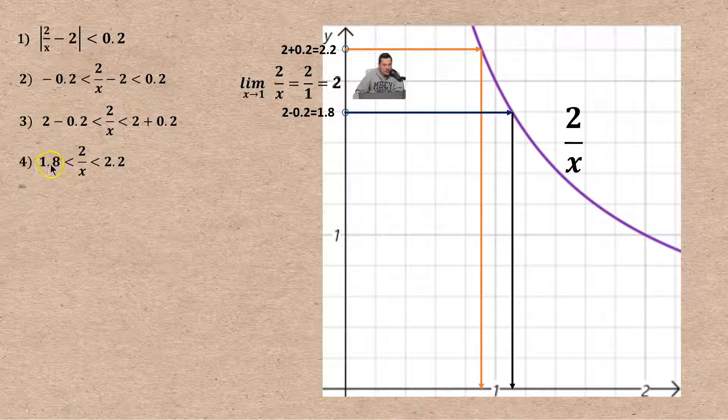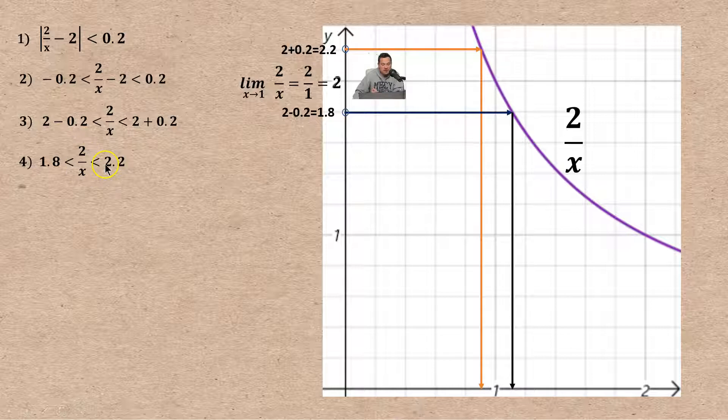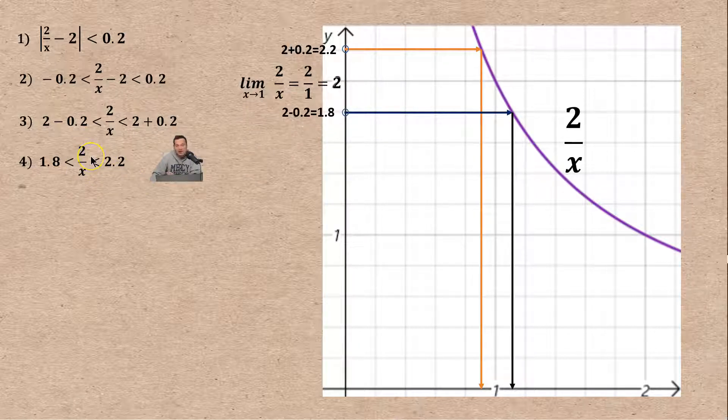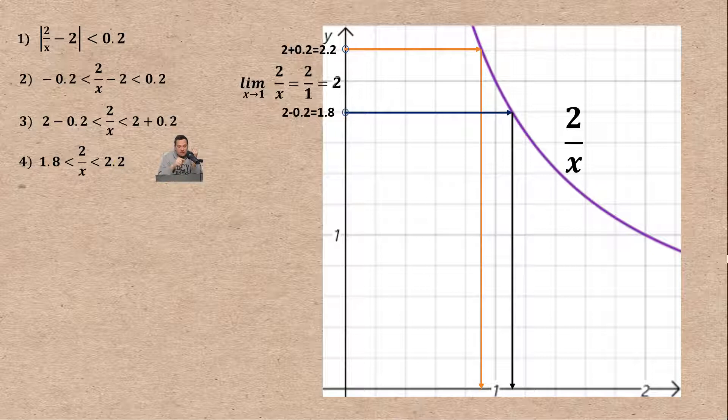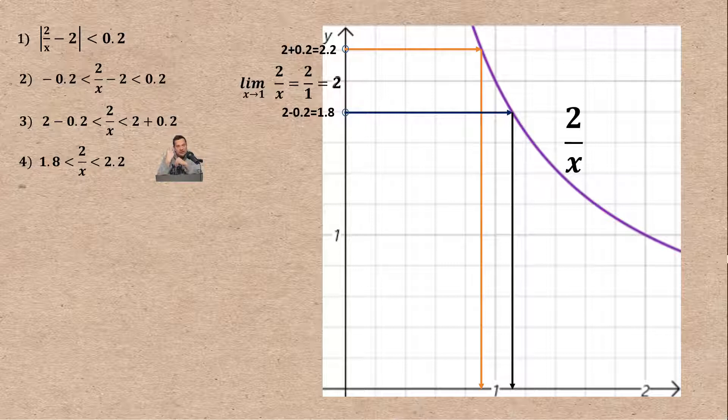At the last step we have 1.8 less than 2 over x less than 2.2. So step number four says that we want 2 over x, the outputs from the function, to be trapped between 1.8 and 2.2. These are inequalities from 1, 2, 3, and 4 that are all talking about the y-axis, what's happening on the y-axis.